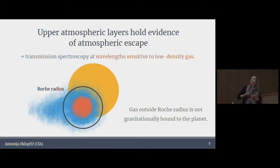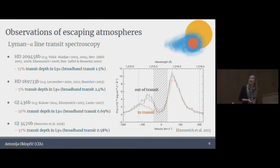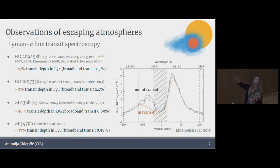Performing transit spectroscopy at wavelengths such as Lyman alpha has been done basically in the last 15 years since papers in 2003–2004. Lyman alpha transits have been observed in exactly four planets in these 15 years, which just tells you how difficult these measurements are. Most exoplanet-hosting stars are intrinsically very faint at these wavelengths.